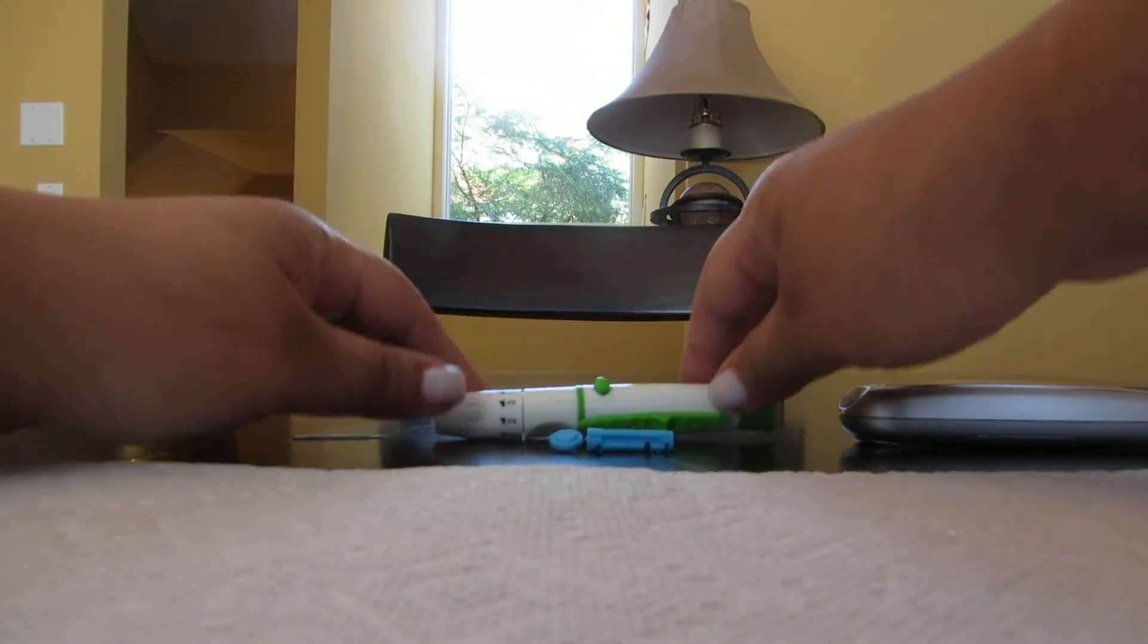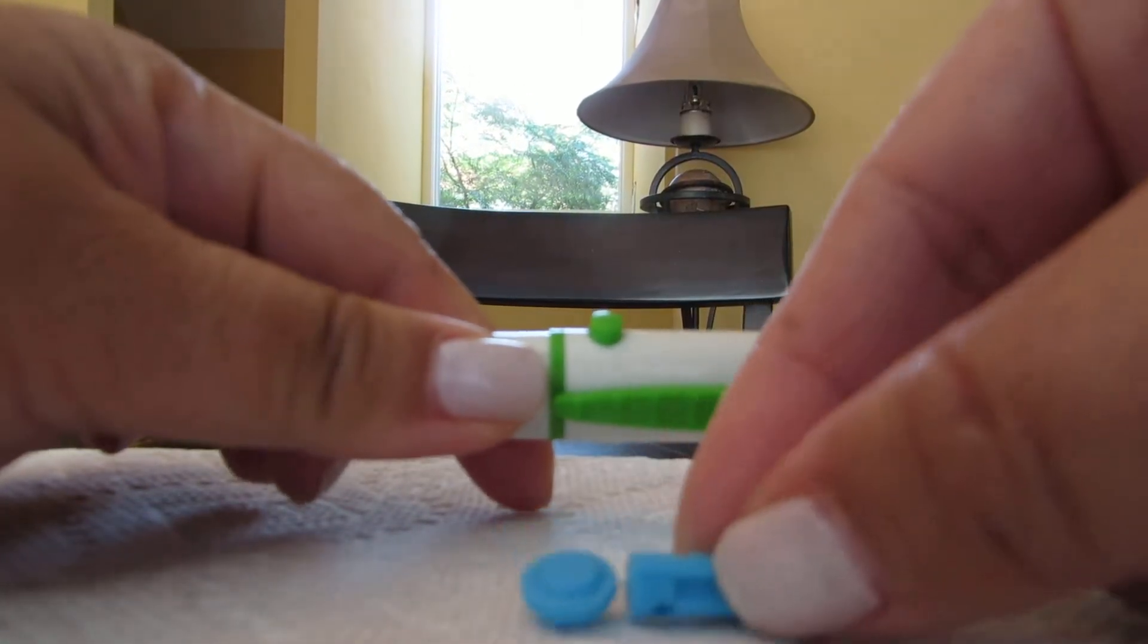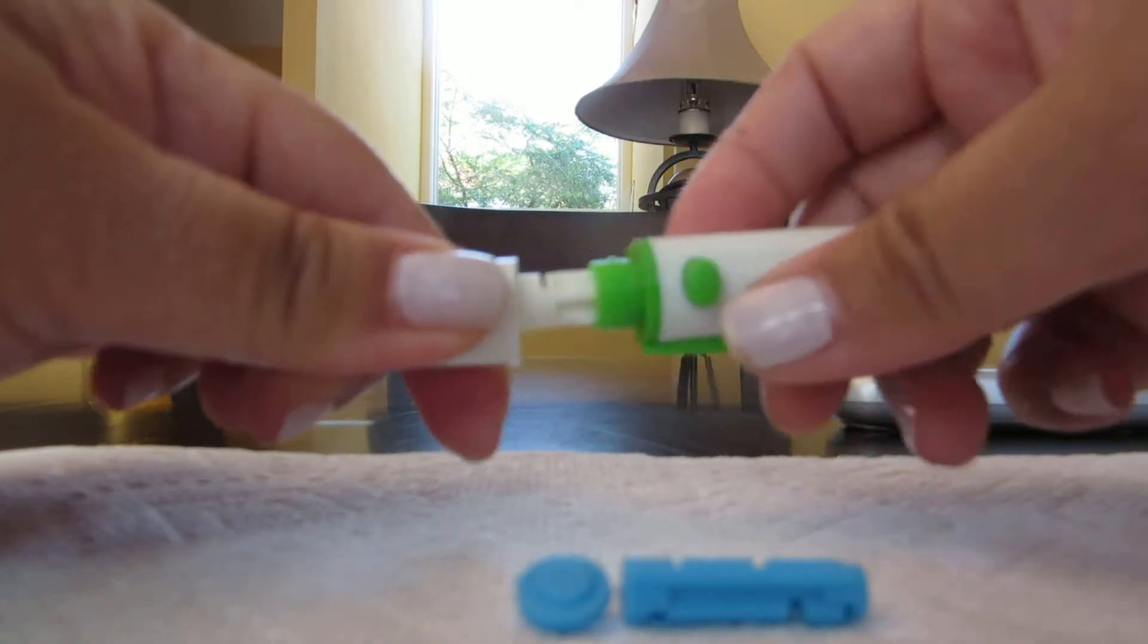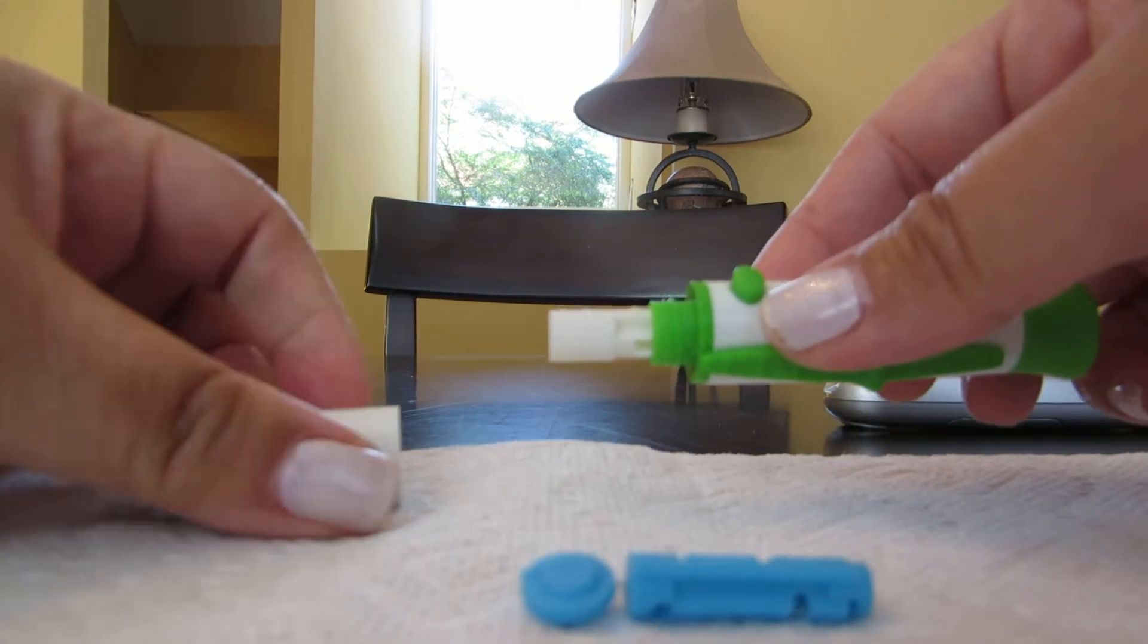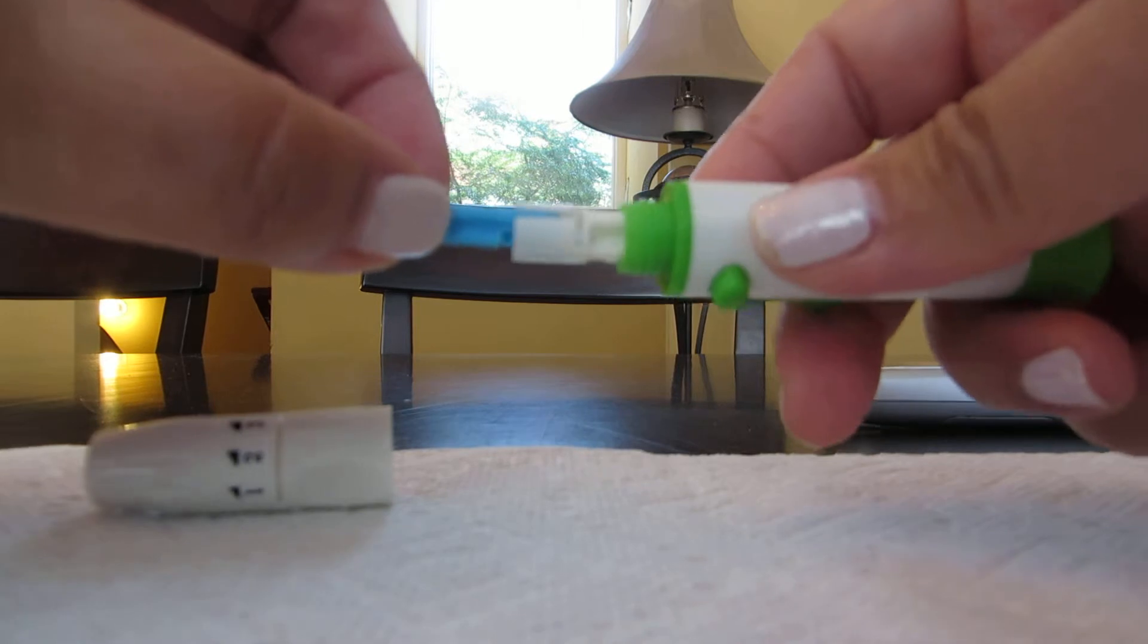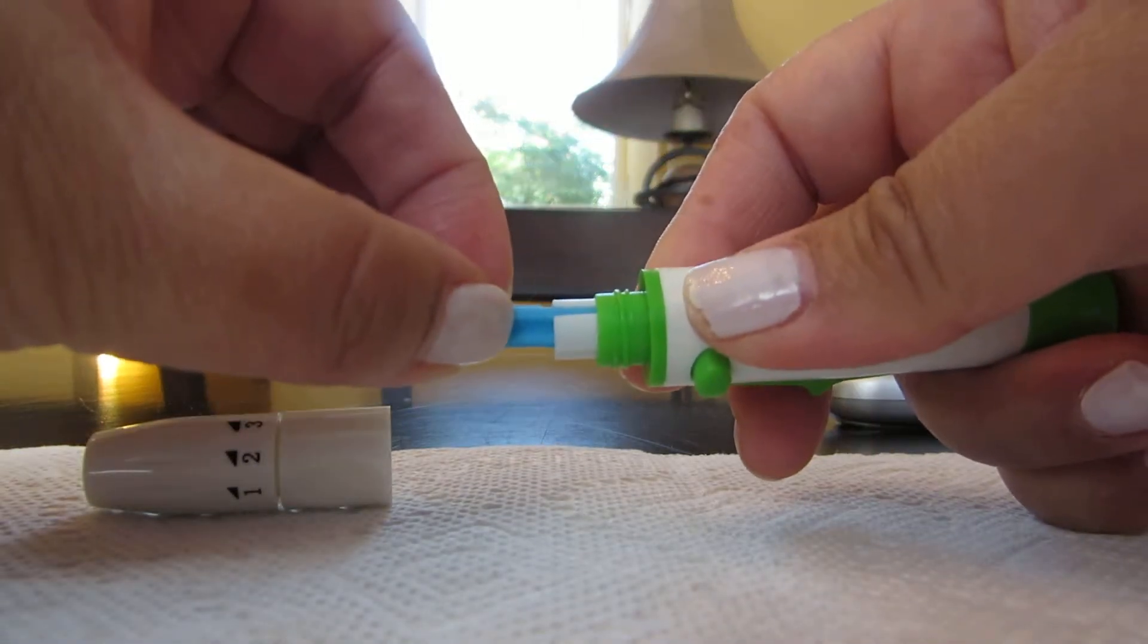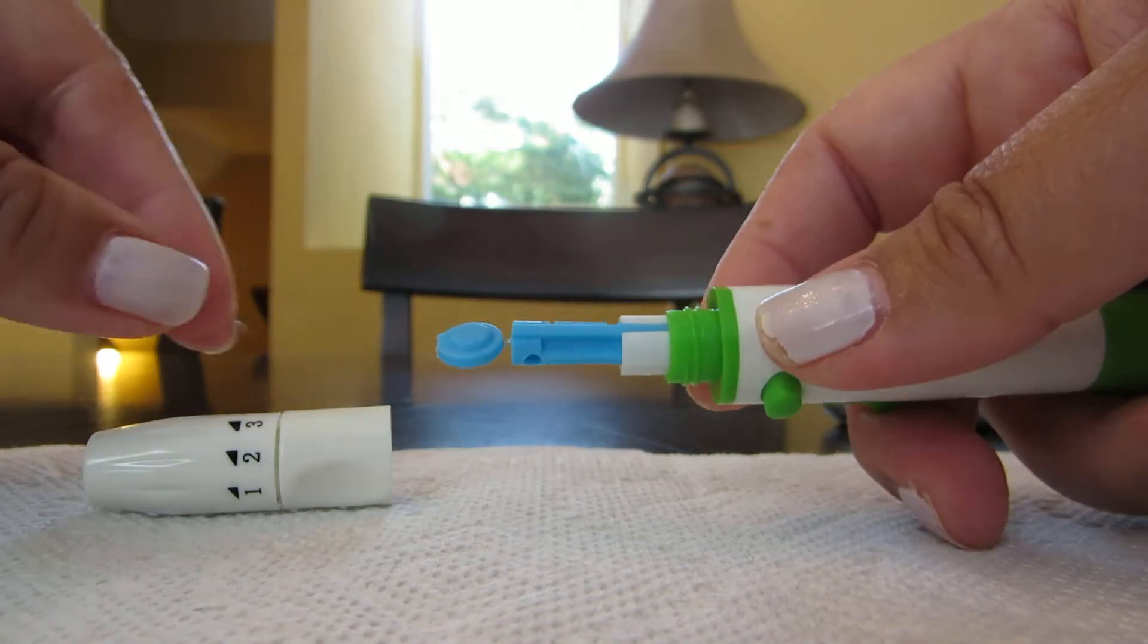After washing your hands, we'll put the lancet together. You have a lancet and its needle, so unscrew to take it apart, put the needle in, and press down so the trigger is ready.